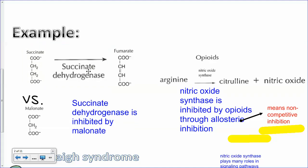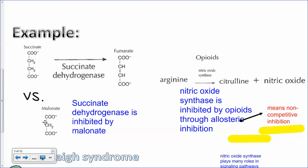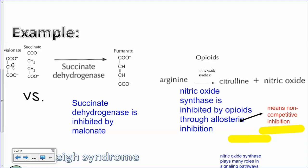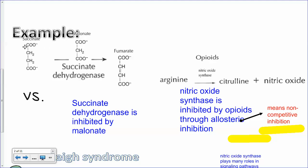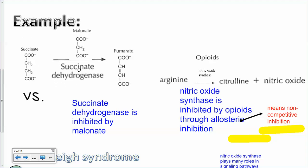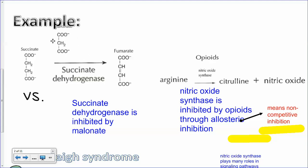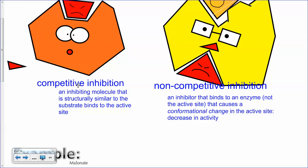The enzyme is here in the middle. Succinate can bind to the active site, but unfortunately malonate — and this is easy to remember because 'mal' sounds bad — malonate has a structure very similar to succinate and so malonate can actually bind to this enzyme at the active site. When malonate is bound, succinate can't actually bind to the enzyme as it's supposed to and therefore cannot be converted to fumarate. This is an example of competitive inhibition where malonate is competing for the exact same active site.